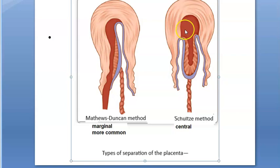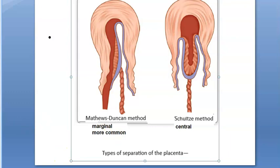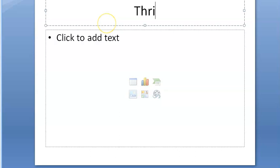With the Schultz method, as the uterus contracts, the separation increases and detachment is facilitated by the weight of the placenta, with retroplacental hemorrhage present. The Matthews Duncan marginal method is the more common of the two.